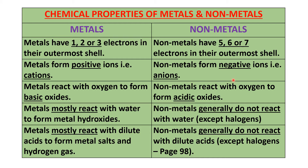Non-metals accept electrons, and that's why they form negative ions — they are accepting negatively charged particles. So when a non-metal accepts electrons, it becomes negative. In other words, they form anions. So metals form positive ions, also called cations, and non-metals form negative ions, also called anions. During electrolysis, cations go towards the cathode, which is the negative electrode, and anions go towards the anode, the positive electrode.